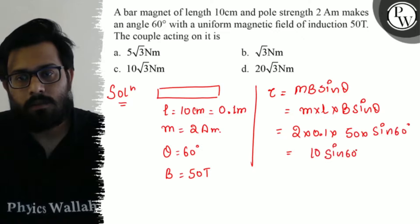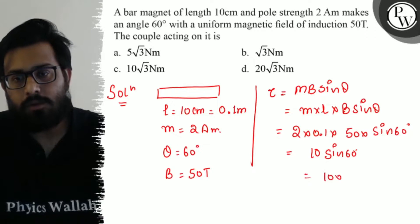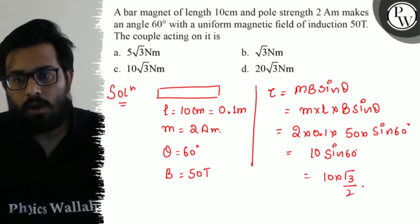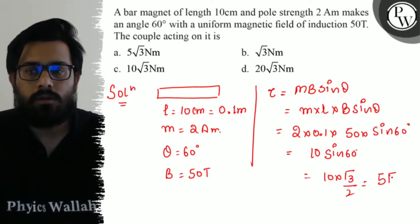So this can be written as 10 into root 3 by 2 or 5 under root 3 newton meter.